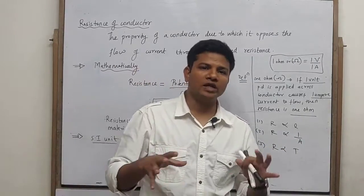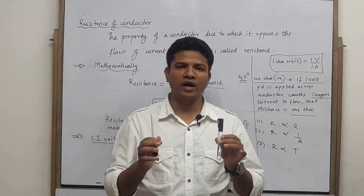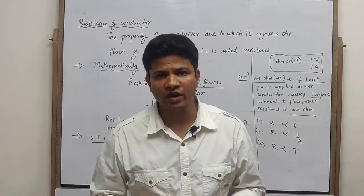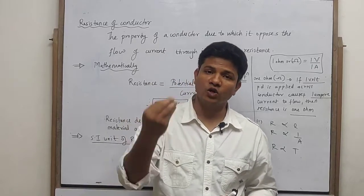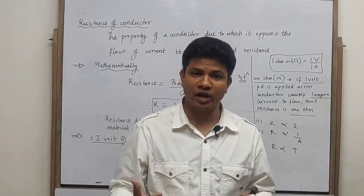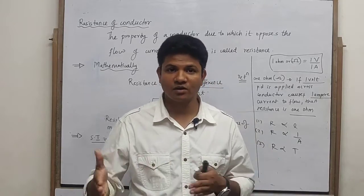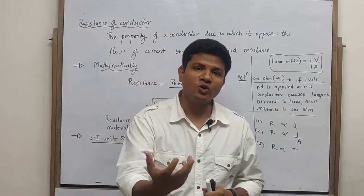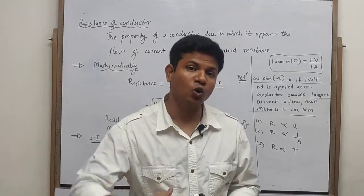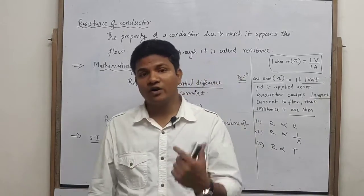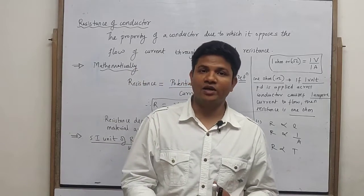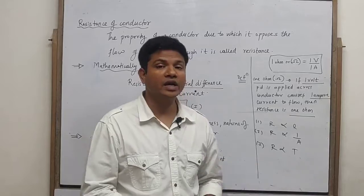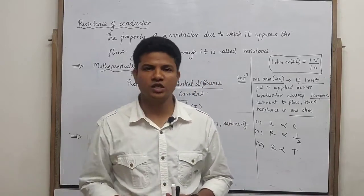Temperature: keeping the other three things constant, consider two wires — one at 20 degrees and one at 60 degrees. At 60 degrees, the electrons and ions have more energy, so their motion is much greater compared to the other wire. This leads to more collisions, more opposition, and therefore more resistance. So greater the temperature, greater is the resistance — resistance is directly proportional to temperature.